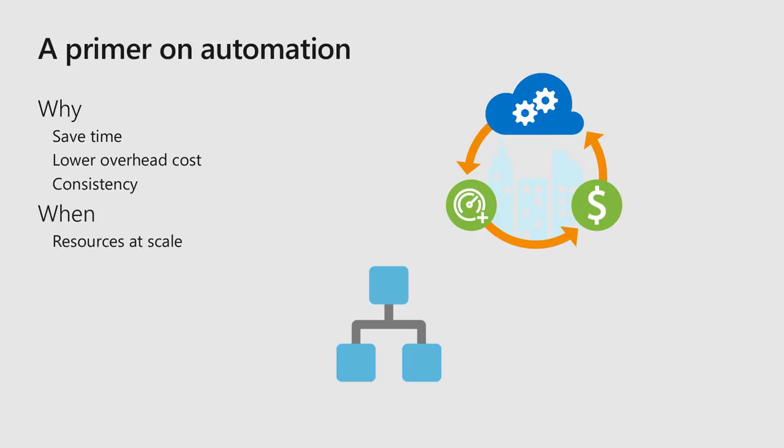Automation is done when you have to manage resources at scale, do configurations of different resources, and keep consistency. Or you want to do orchestration where you first do step one, then step two and step three, and you want to make sure everything happens in the same order — like the second step happens after the first step finishes.